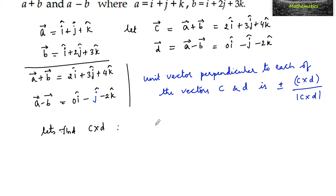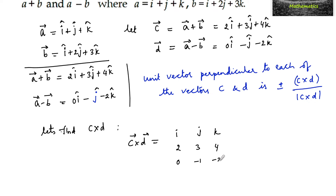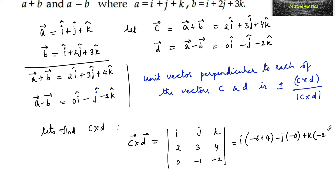Vector c is 2i plus 3j plus 4k and vector d is 0i minus j minus 2k. So c cross d is equal to the determinant with i, j, k in the first row; scalar components of c are 2, 3, 4; and scalar components of d are 0, minus 1, minus 2. This equals i times of minus 6 plus 4, minus j times of minus 4, plus k times of minus 2, which gives minus 2i plus 4j minus 2k.